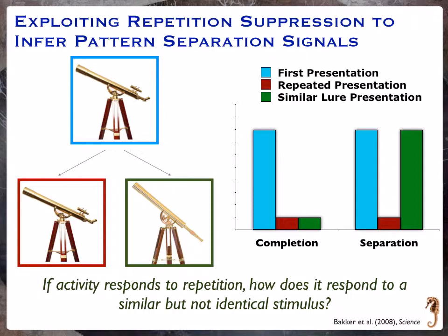Very often, if I show you a picture like this telescope here in blue and show it to you again, you'll see in fMRI signals a reduction in activity. For our present purposes it doesn't matter if it goes up or down — all we need is that it changes with repetition. If instead I showed something similar like this telescope in green, we can see how a particular region responds. A region doing pattern completion will treat it like a repetition and show the same activity drop, whereas a region showing pattern separation will treat it like a first presentation — because it's coming up with a different representation.